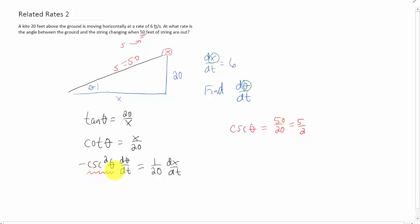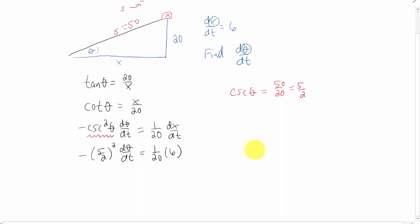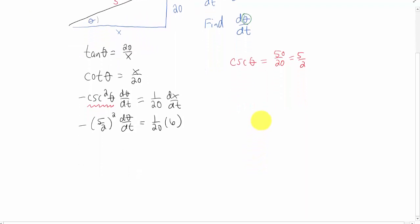And we can plug that in right here, and we get negative 5 halves squared d theta/dt equals 1 over 20, and dx/dt was 6. We can simplify this slightly and solve for d theta/dt.